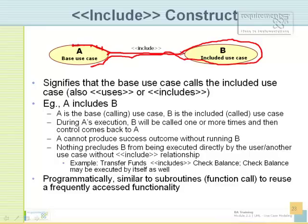So logically, you start in a base use case, run off to do this additional process which resides elsewhere, then come back to A. For logical purposes, it's as if use case B is copied onto use case A — instead of running it as steps 8, 9, 10, 11, 12, you're running another use case's steps and then resuming. Control always returns to A. A cannot produce a success outcome without running B. If B fails for whatever reason — system is down or that part of the system is not accessible — A cannot be successful, because B is a mandatory requirement for A.